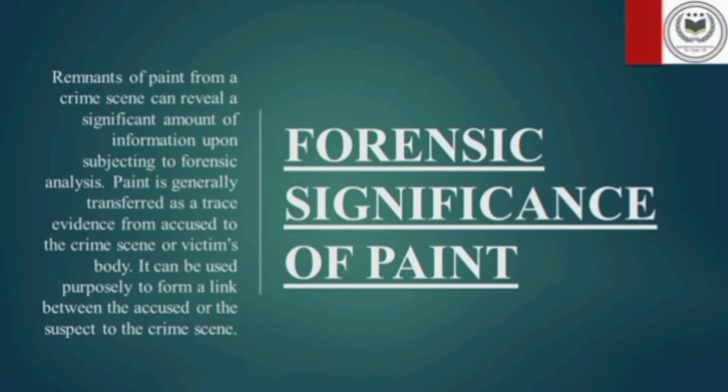Paint evidence possesses great significance when it comes to analysis of crime and crime scenes. Remnants of paint from a crime scene can reveal a significant amount of information upon subjecting to forensic analysis. Paint is generally transferred as trace evidence from the accused to the crime scene or victim's body, and can be used to form a link between the suspect and the crime scene. The main aim of the analysis of the paint sample is to create a link between place, person, and object, narrowing the list of suspects by comparison between the test and the control sample.